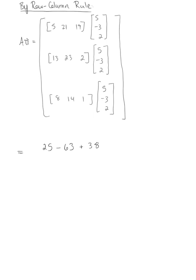And then the second row, we have 5 times 13, which is 65, minus 3 times 23 is negative 69, plus 2 times 2 is 4.